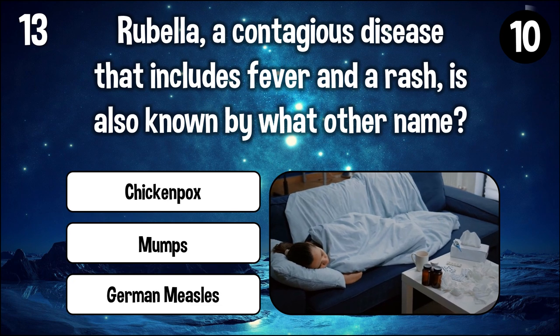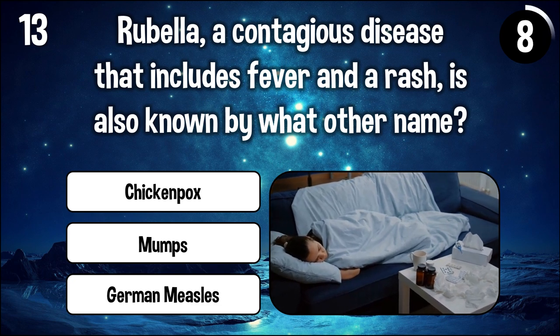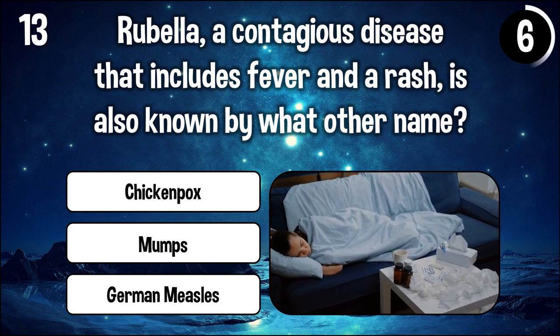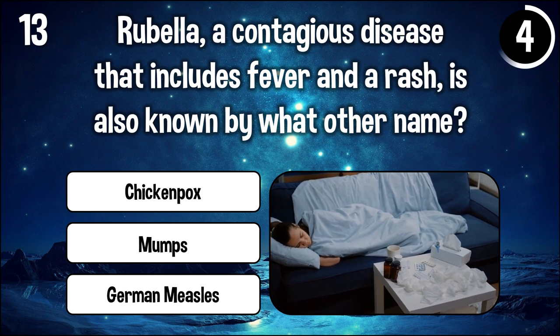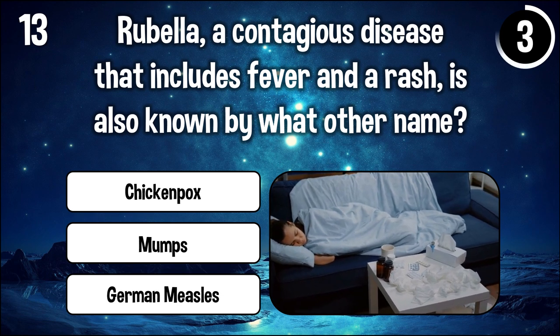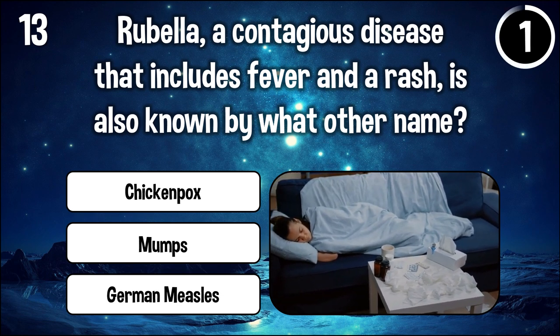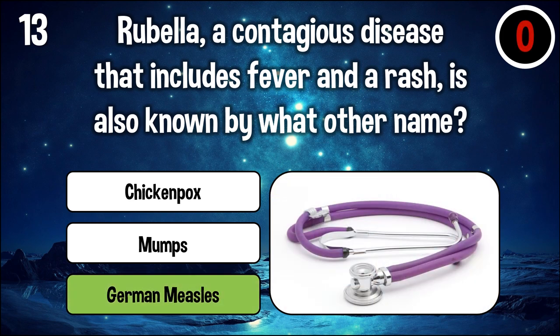Rubella, a contagious disease that includes fever and a rash, is also known by what other name? The answer is German measles.